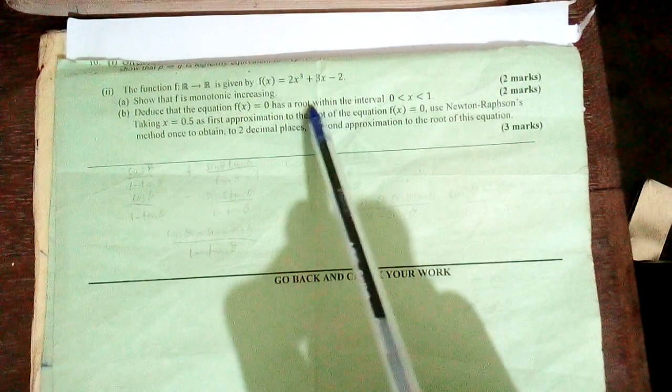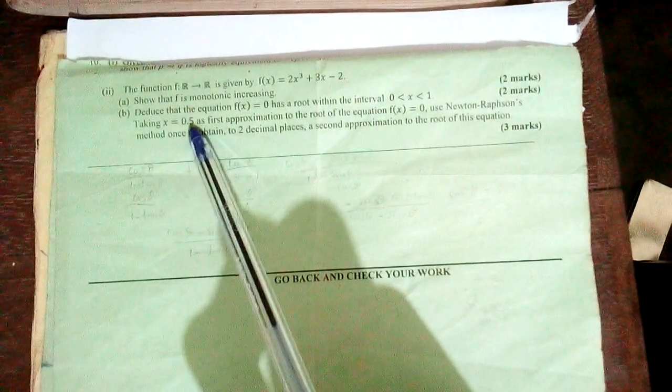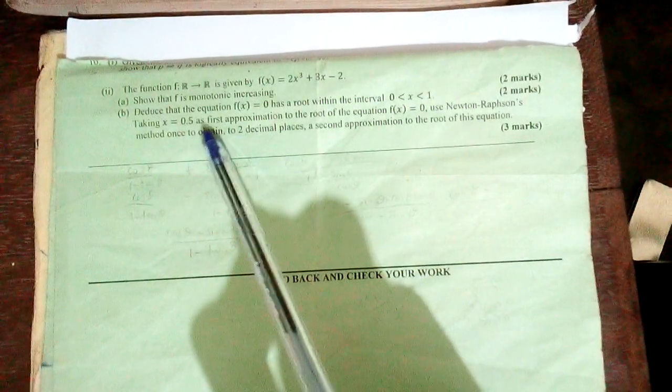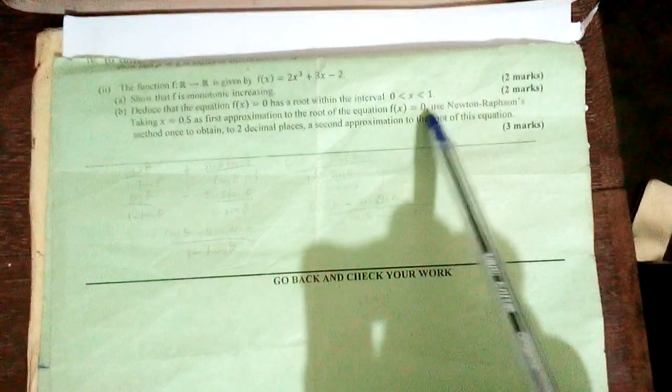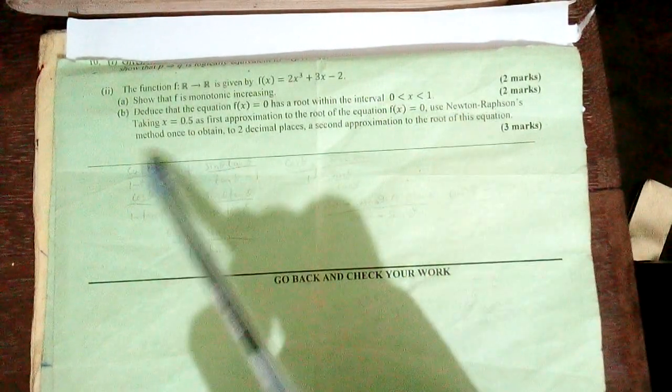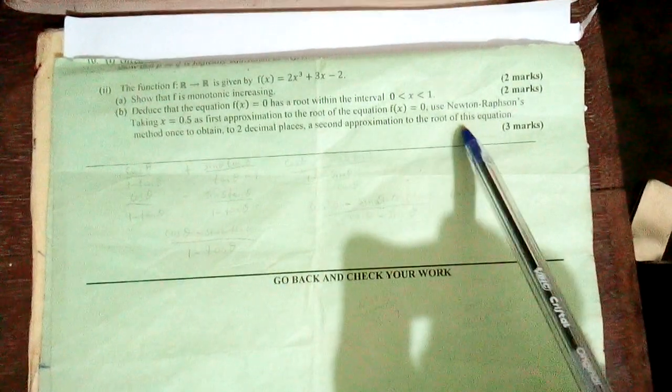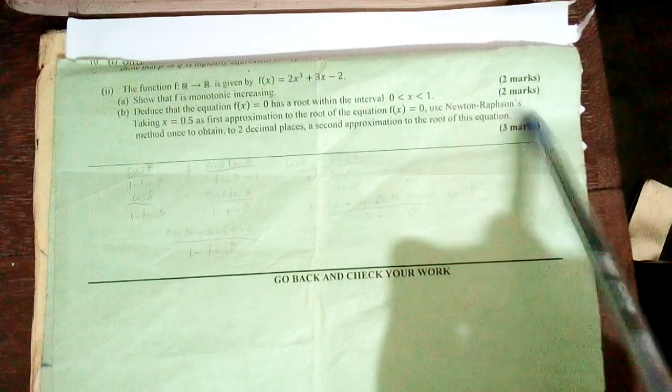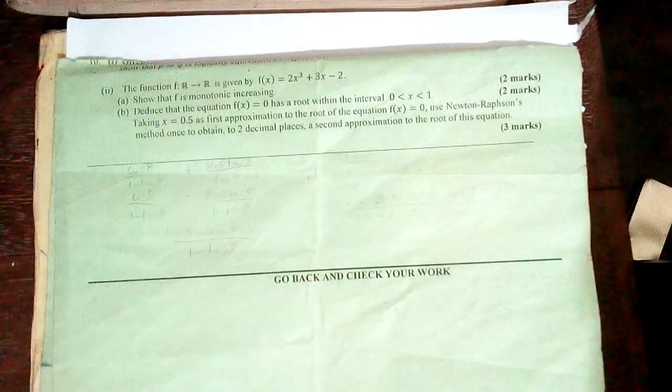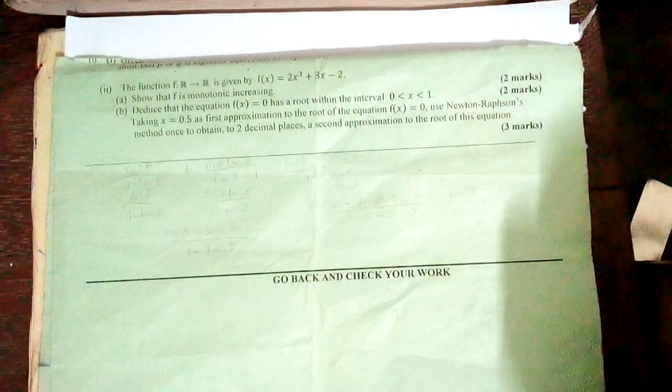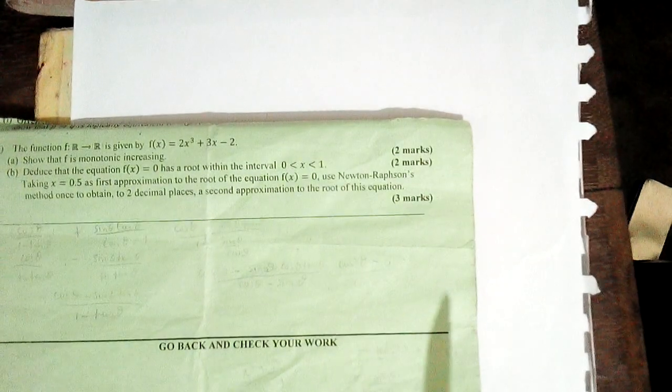Part three involves taking x = 0.5 as the first approximation to the root of f(x) = 0 using Newton-Raphson's method to obtain a second approximation to two decimal places. The question is worth 5 marks total. We are going to begin with solving part one, which asks us to show that the function f(x) = 2x³ + 3x - 2 is monotonic increasing.